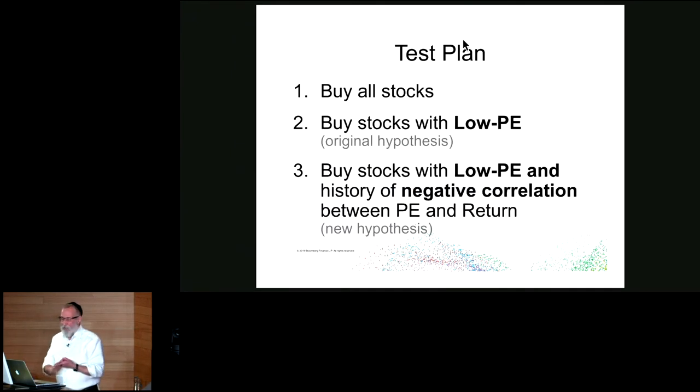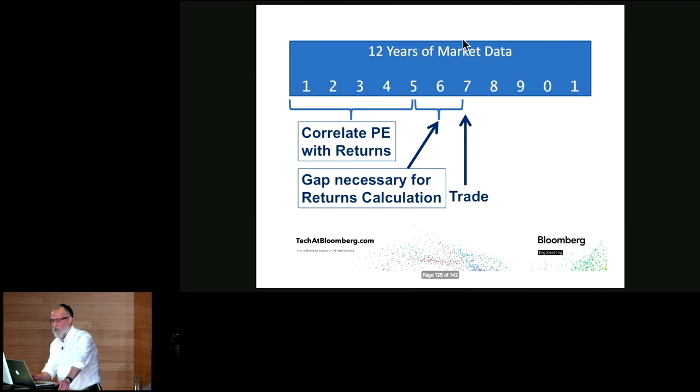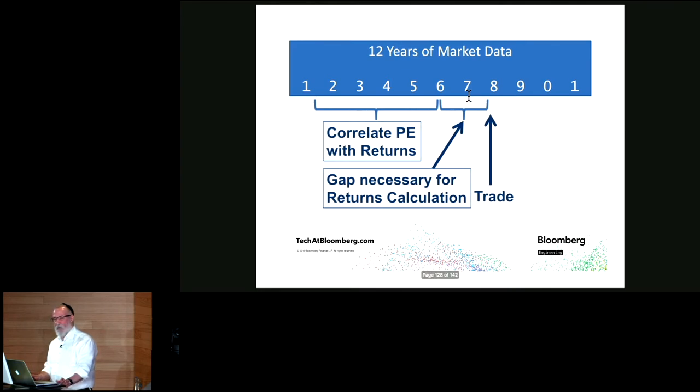So here's the test plan. Buy all the stocks. Buy the stocks with low PE, that was my original hypothesis. Or buy stocks with low PE and a negative correlation between PE and return. That's my new hypothesis. So I need a period of time that I calculate the correlation. It could be five years, four years, and so forth. I need a gap to calculate the return before I actually make a trade. So for example, two year returns. The latest correlation that I can calculate has to be two years before the trade day, because otherwise I'm using a price in the future. And if I could predict the future, there'd be no point for this whole analysis. But once I set that up, I can then go through a whole bunch of dates and do that.